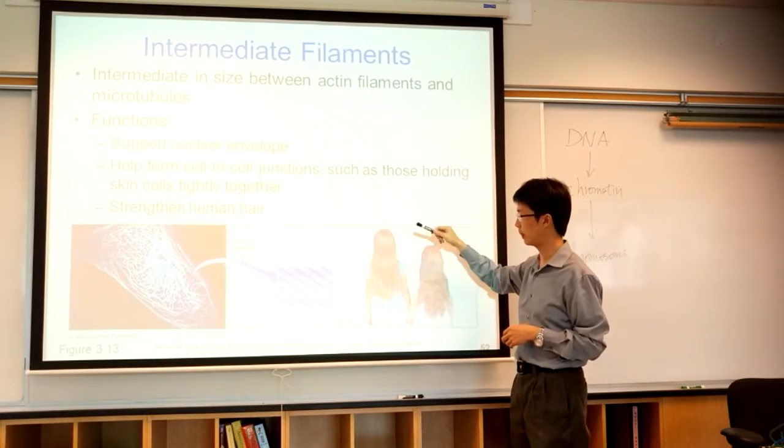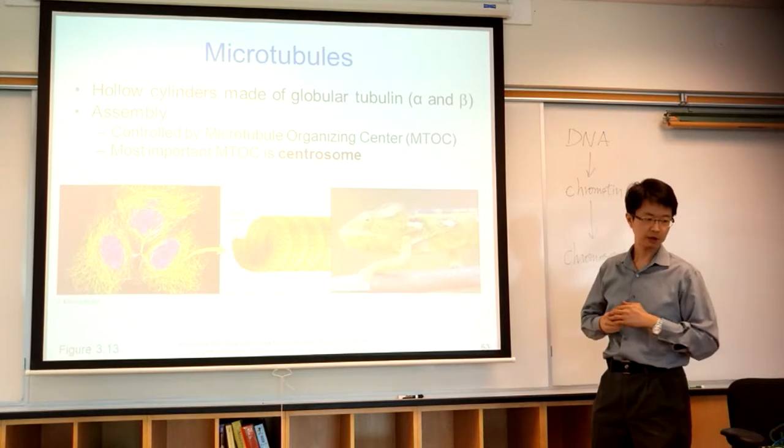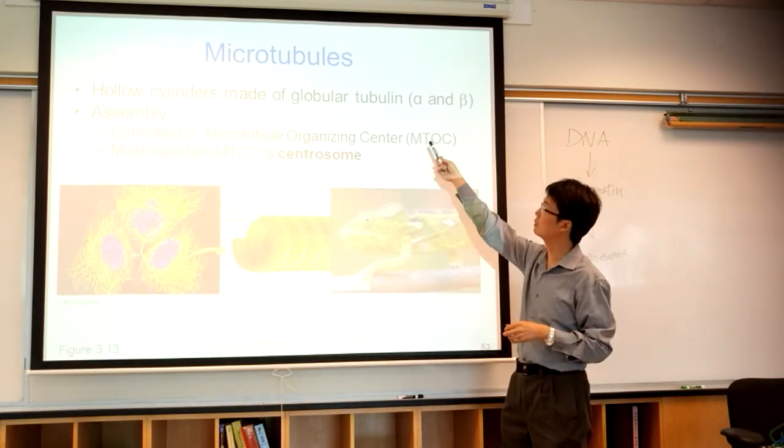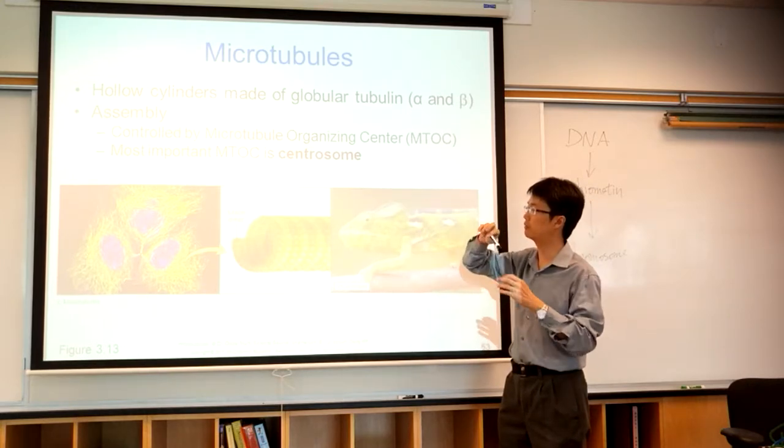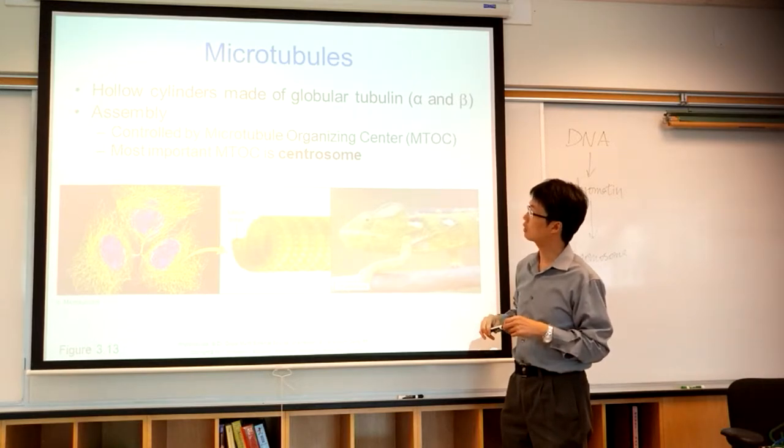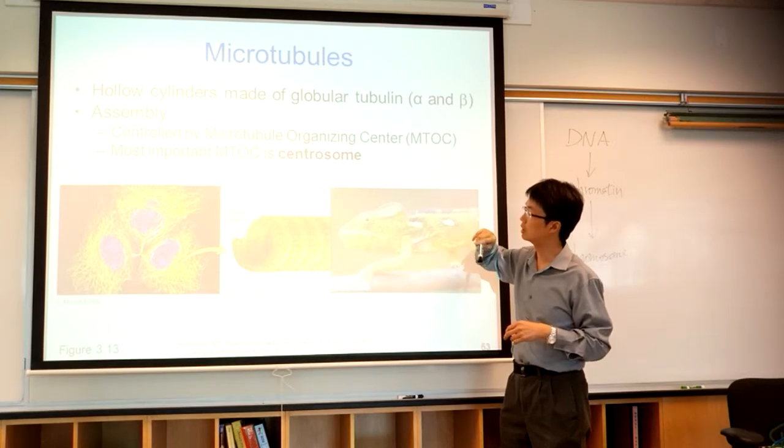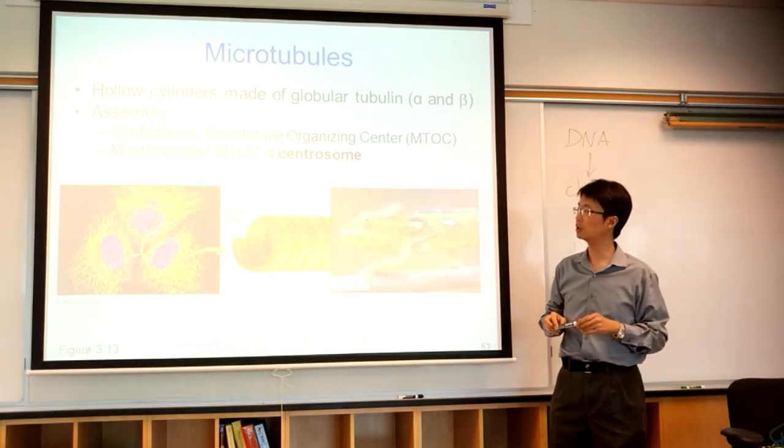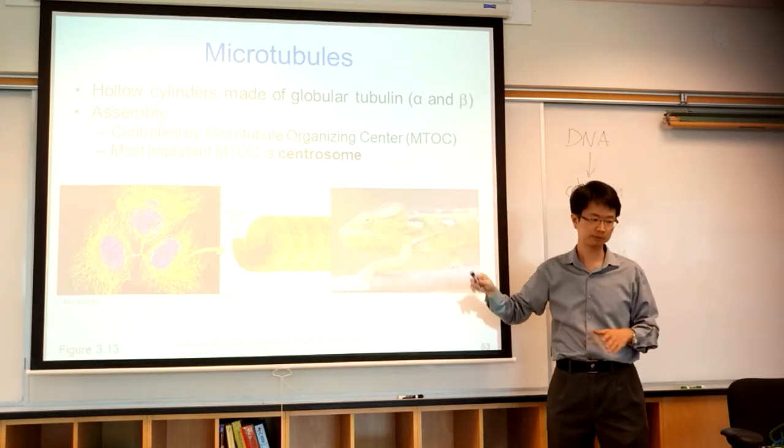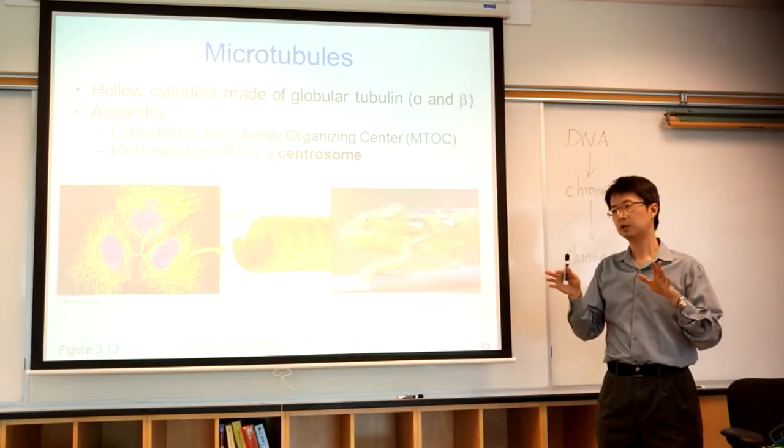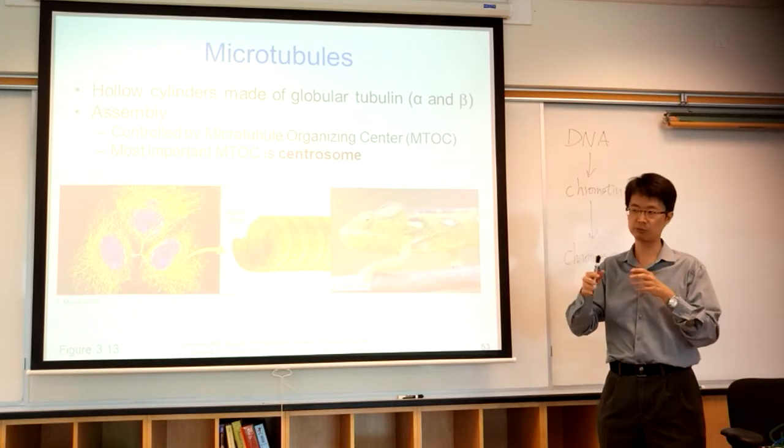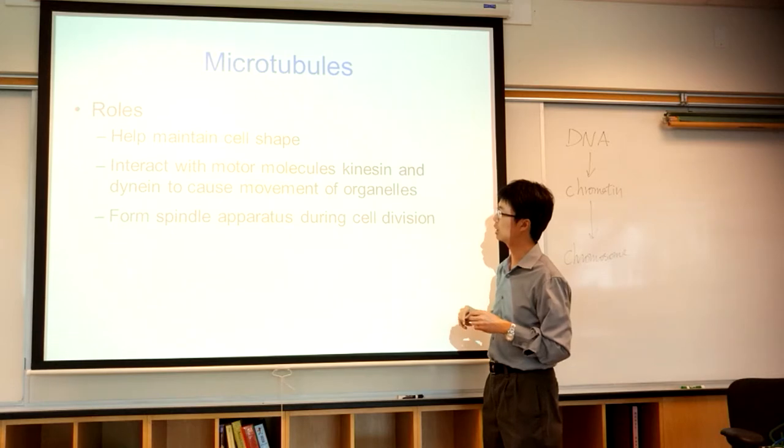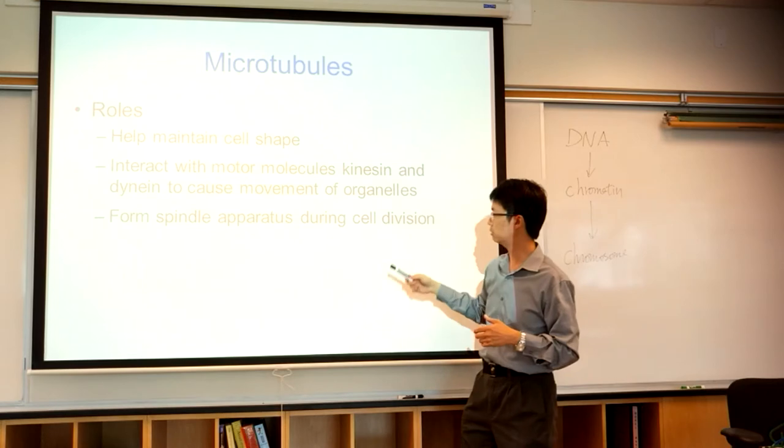Microtubule. They use a globular tubulin, globular tubulin. Globular meaning they are ball shape, spherical shape. Tubulin meaning a protein. You have alpha and beta spherical shaped protein. They are controlled by microtubule organizing center, MTOC. You can find microtubule in the centrosome. When we talk about cell division, mitosis and meiosis, we'll learn more about centrosome and the microtubule. Microtubule, they are the one that make up the spindle that attach the chromosome during cell division. They maintain cell shape. The kinesin and dynein move the organelles. I told you that spindle, they form spindle during the cell division.